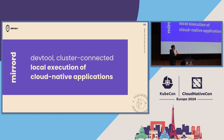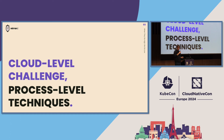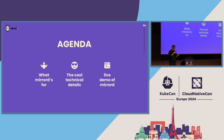mirrord enables cluster-connected but local execution of cloud-native applications. First, we're going to talk about what mirrord is for. Then we'll take a look at some of the low-level technical details of the implementation. And to wrap it all up, there's going to be a short live demo. During this talk, I hope you'll understand why we went in this very low-level direction for mirrord, and also how it works in general terms.